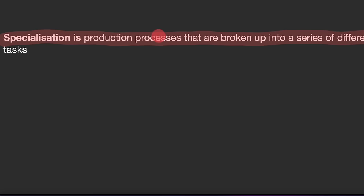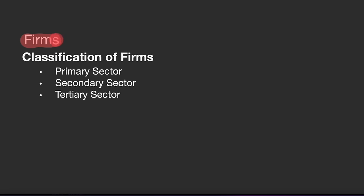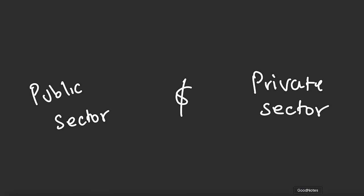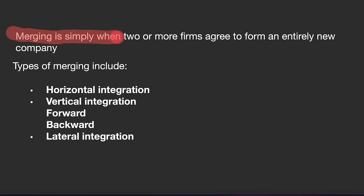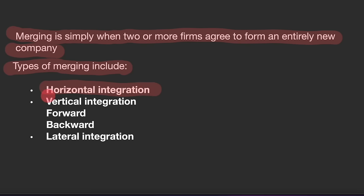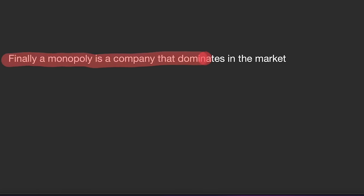Factors that cause wage differentials in the same job include local pay agreements, discrimination, and non-monetary agreements. Specialization is when production processes are broken up into a series of different tasks. Trade unions exist to protect the interests of their members concerning wages, benefits, and working conditions. Firms are classified into primary, secondary, and tertiary sectors, as well as the public and private sectors. Merging is when two or more firms agree to form an entirely new company. Types of merging include horizontal integration, vertical integration (forward and backward), and lateral integration. Objectives of firms are survival, growth, and profit maximization. A monopoly is a company that dominates the market.